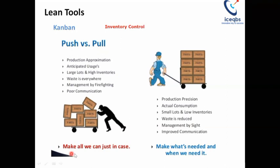In the push type, the concept is 'make all we can, just in case.' That means whatever is possible to produce with the available resources — machines and other resources — you make all you can, without worrying about orders. The idea is that in case an order comes, you'll be able to deliver it immediately so that resource utilization will be fully maximized. However, you are not producing against firm orders from the customer; it is only based on anticipated usage.